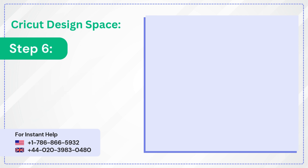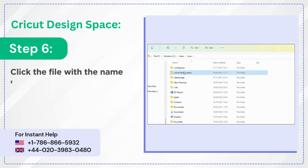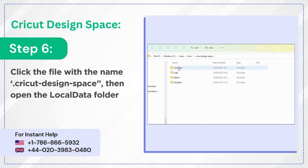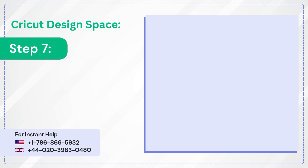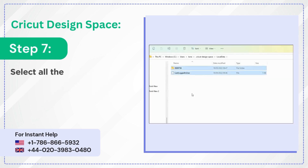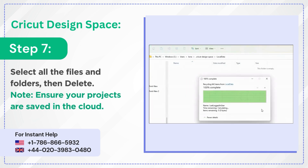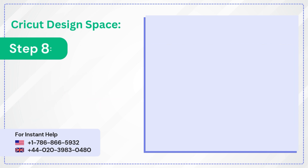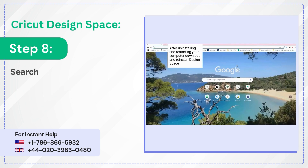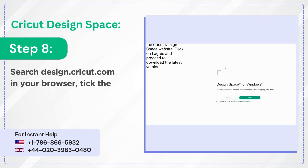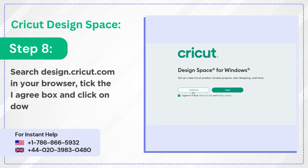Step 6: Click the file named .cricut Design Space, then open the Local Data folder. Step 7: Select all the files and folders, then delete them. Note: ensure your projects are saved in the cloud. Step 8: Search design.cricut.com in your browser, tick the I Agree box, and click on Download.